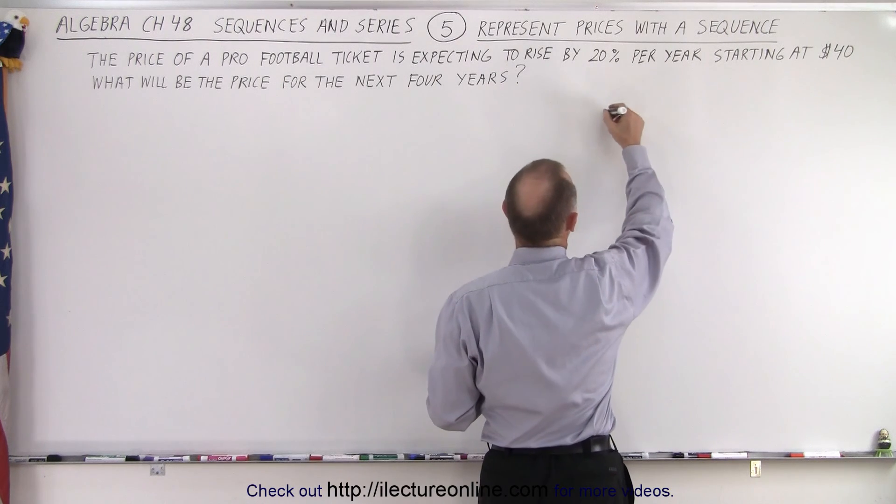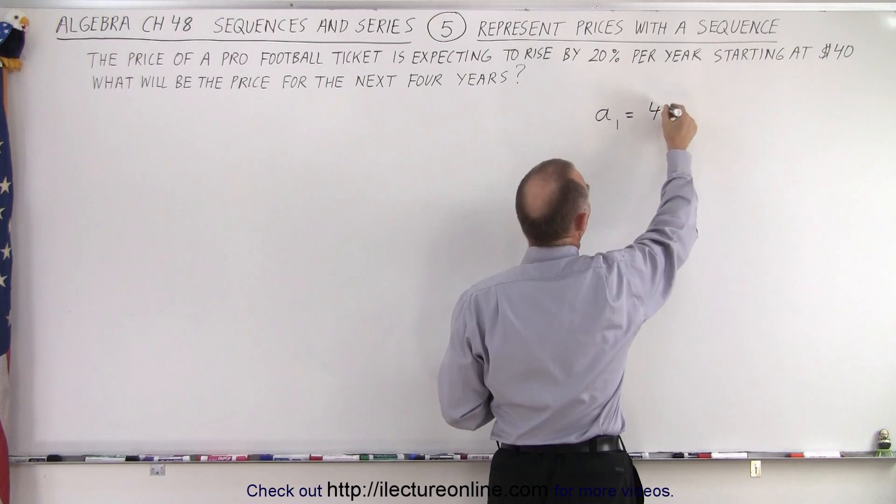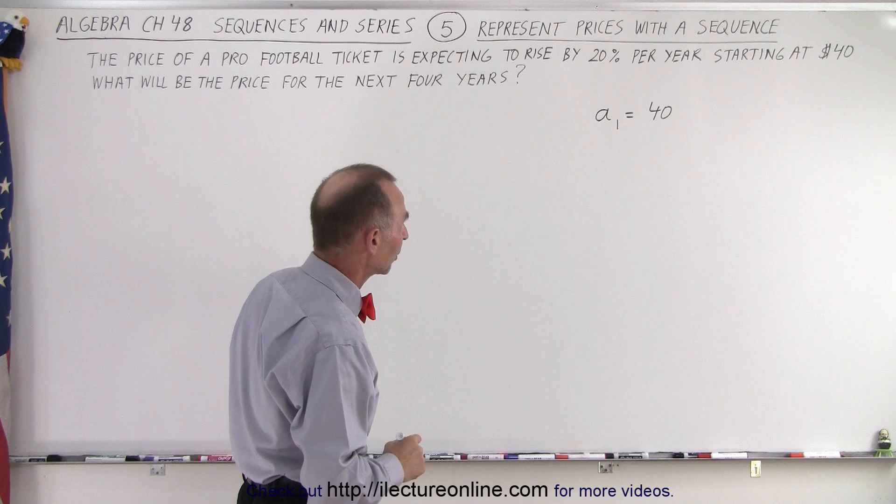We'll start with the first term of the sequence and we'll call that a₁, and we can say that starts at $40. We'll leave out the dollar sign so we can just simply work with the numbers.